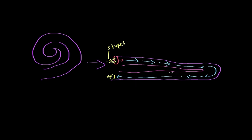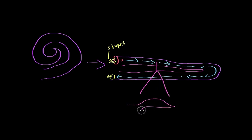Now we want to look at a cross-section of the organ of Corti to understand how it turns fluid motion into sound perception. If you look at a cross section, you would see something like this — you've got an upper membrane and a lower membrane.